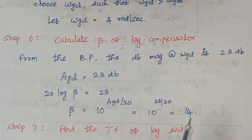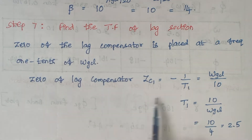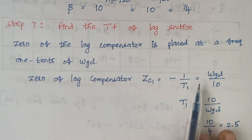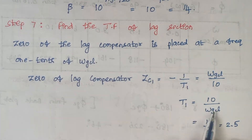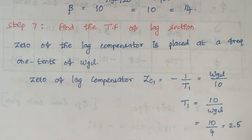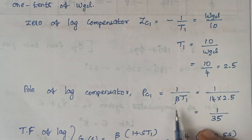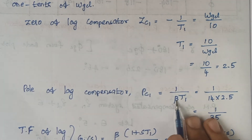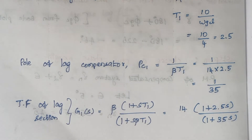To find the transfer function of the lag section: the zero of the lag compensator is at −1/T1 = ωgcl/10, so T1 = 10/ωgcl = 2.5. The pole of the lag compensator is at −1/(βT1). Substituting β = 14 and T1 = 2.5, we can write the transfer function of the lag section using these values.